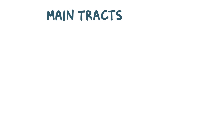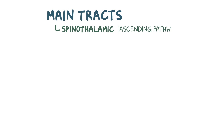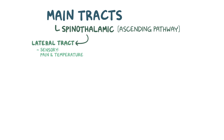There are a few main tracts to remember. First, there's the spinothalamic tract, which is an ascending pathway divided into two parts. The lateral tract carries sensory information for pain, pressure, and temperature, while the anterior tract carries information for crude touch — or the sense that one has been touched — without being able to localize where they were touched.